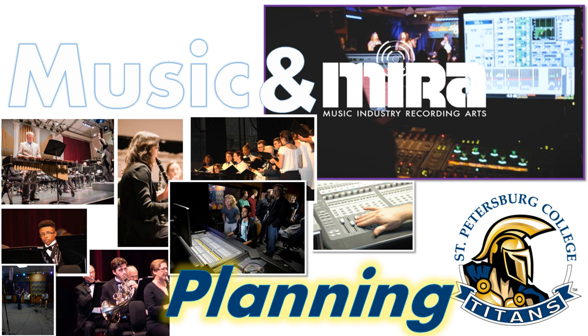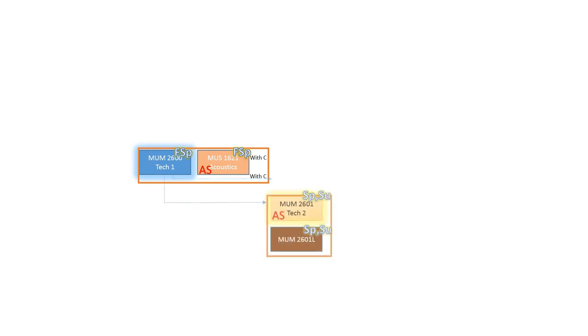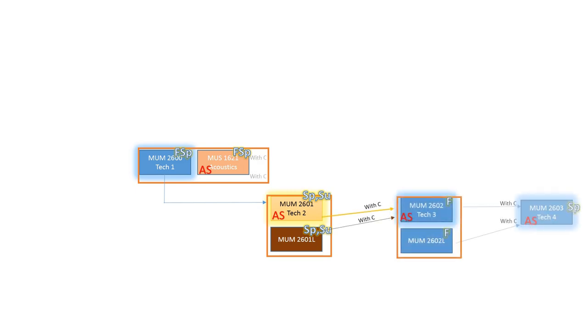Here is the overview of the Music Industry Recording Arts degree. The degree has three sub-plans with a core experience shared by all. Everyone takes Music Tech 1, which has a co-requisite of Acoustics and Psychoacoustics. Everyone takes Music Tech 2, which has a lab linked to it. Everyone takes Music Tech 3, which also has a lab. Everyone takes Music Tech 4.